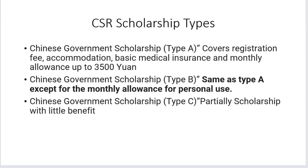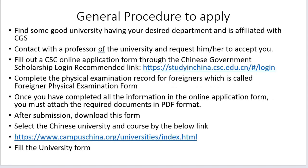Always select Type A while filling your application form. The general procedure to apply: first, find a good university that has your desired department and is affiliated with CGS (Chinese Government Scholarship). Contact a professor at that university — it's not mandatory, but if the professor gives you an acceptance letter, your chances of getting the scholarship will be higher. Then fill out the CSC online application form through the Chinese government scholarship login link.